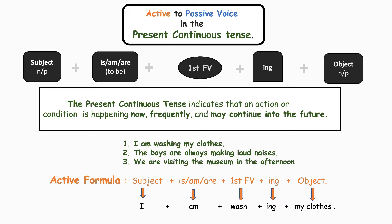Who is doing the action? 'I' am doing the action. 'I'm washing' — that's the action. The action is done upon 'my clothes,' which is the object. Let's go on to the next slide.